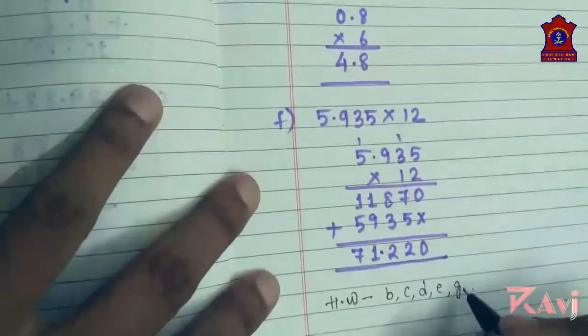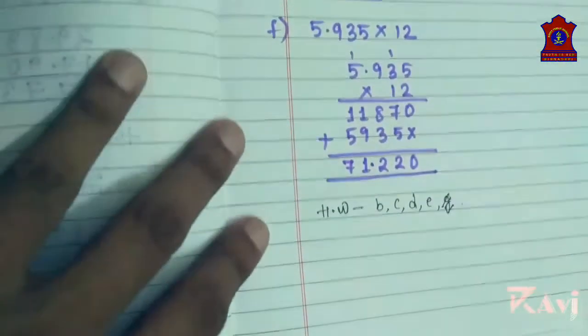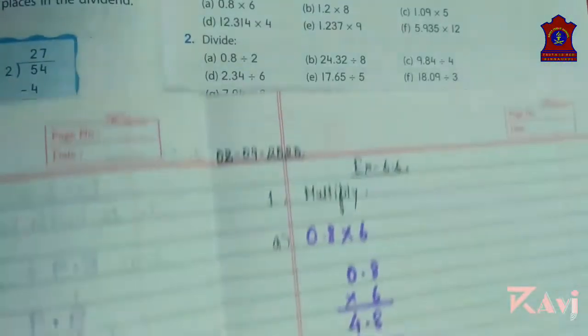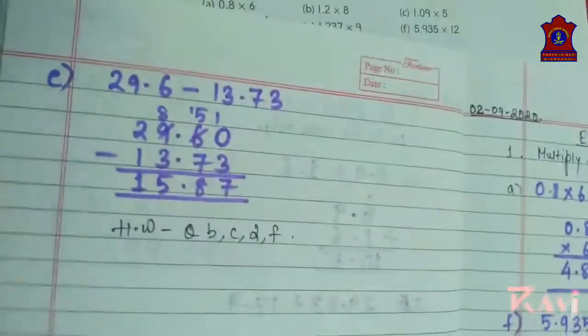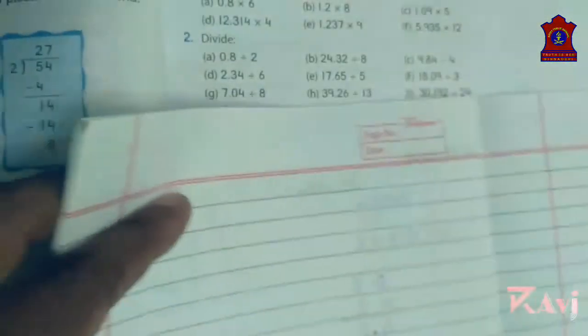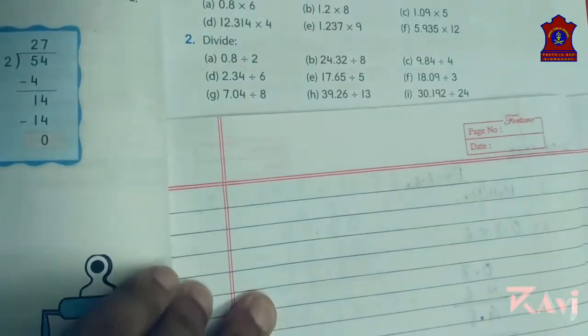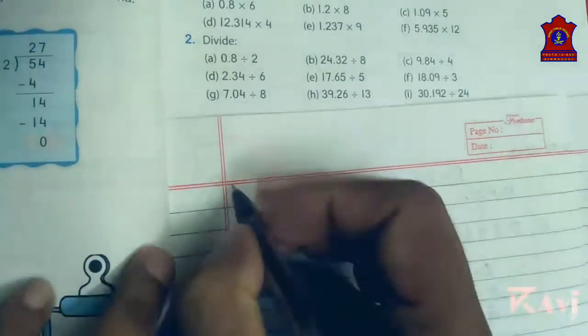G is not there, so b, c, you have to clear. Now we will be moving to division. We will be moving to division. How to divide? See, portion number two.